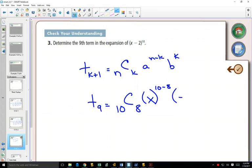B will be negative 2. So anytime there's a subtraction in your binomial, that negative goes with your second term. And K is 8.